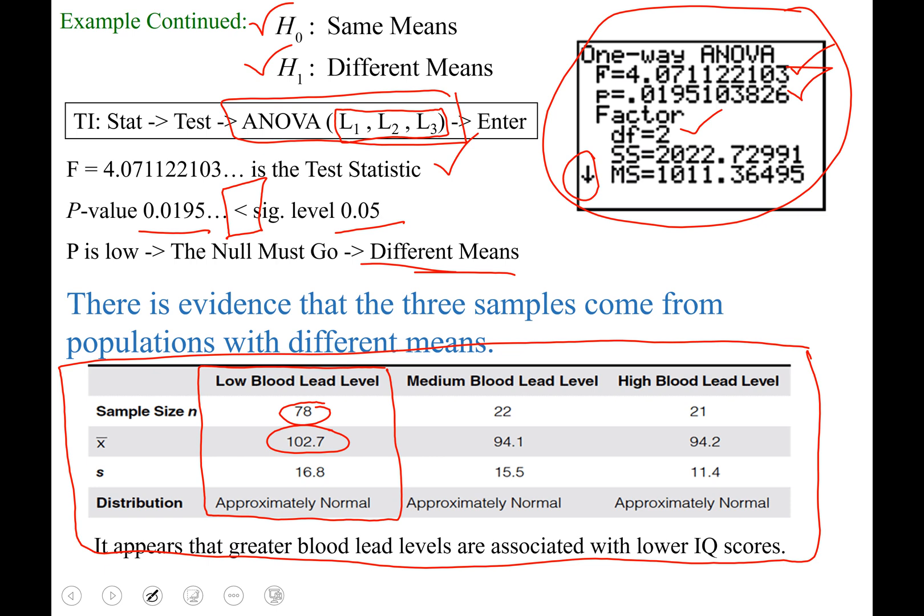Pick your calculator back up. Hit Stat, arrow over one time to calculate, and the first program there, it's the first one we learned in this class called one-var stats. Open it, and if you run it off of list one, so second and the number one frequency list, you can leave blank, and then go ahead and calculate. You see that it has x-bar as 102.7, and you'll see lowercase s sub x, sample standard deviation of 16.8 right there.